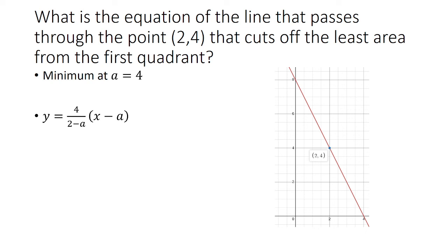So recall the equation was 4 over 2 minus A times quantity (x minus A). Plug in A equals 4 to get our final answer of y equals negative 2 times (x minus 4), or y equals negative 2x plus 8.